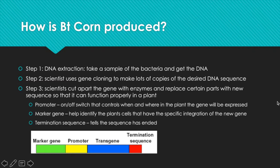Step three is called gene design. During this step, the scientists cut apart the gene with enzymes and replace certain parts with new parts. The first part is called the promoter, and it acts as an on switch that controls when and where in the plant the gene will be expressed. The second one is the marker gene, and it helps identify the plant cells that have the specific integration of the new gene. The last part is called the termination sequence, and it basically tells that the sequence has ended.